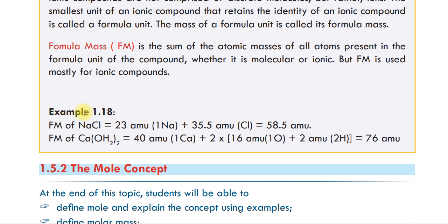Here we have Example 1.18: the formula mass of sodium chloride. Sodium chloride is an ionic compound — sodium is a metal and chlorine is a non-metal.